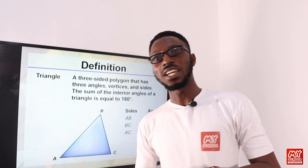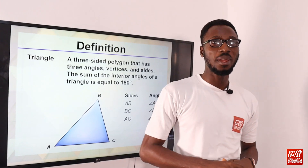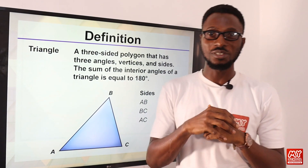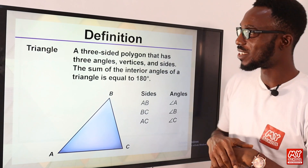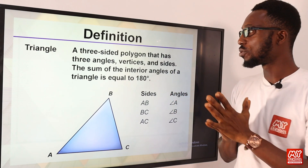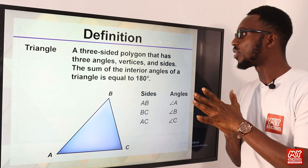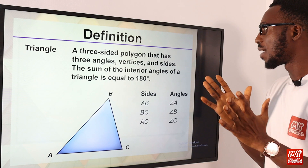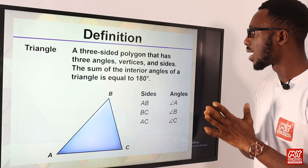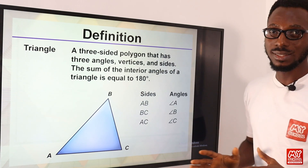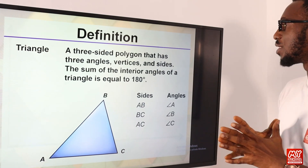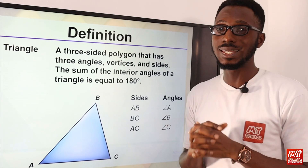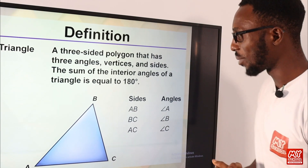Welcome back to my school channel. So right here we have triangles. Let's kick off with the definition of triangles. A triangle is a three-sided polygon that has three angles, vertices and sides. The sum of the interior angles of a triangle is equal to 180 degrees.